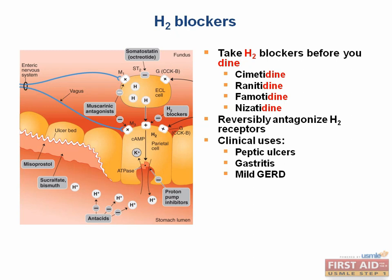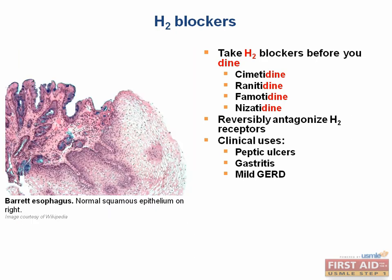Clinically, these are used for peptic ulcers, gastritis, and mild esophageal reflux. So if they help prevent esophageal reflux, what precancerous state would they also prevent? That's right — Barrett's esophagus.